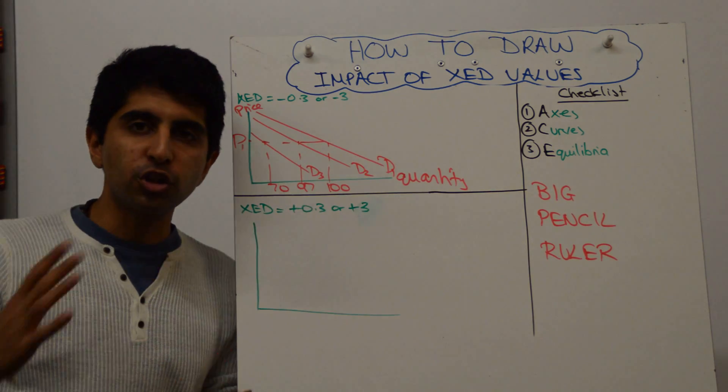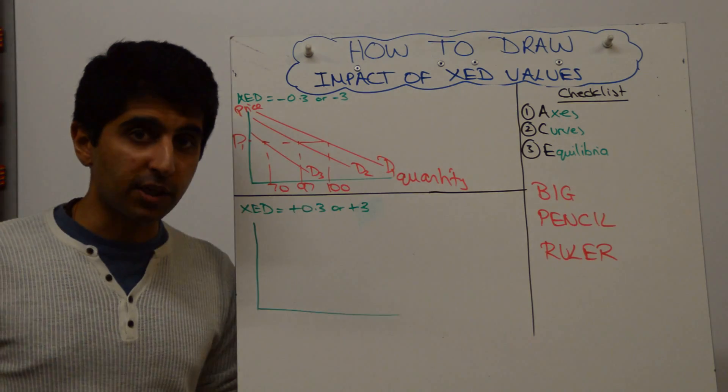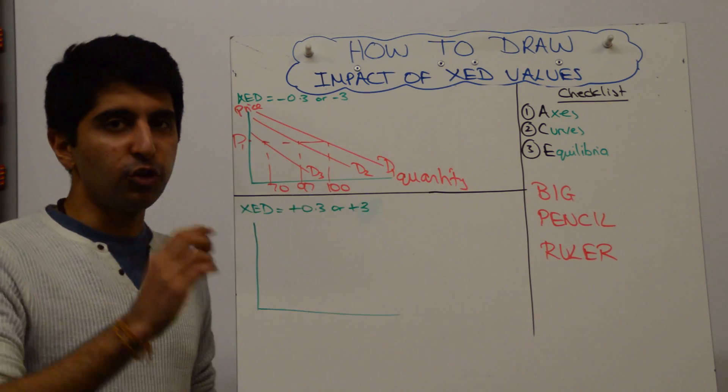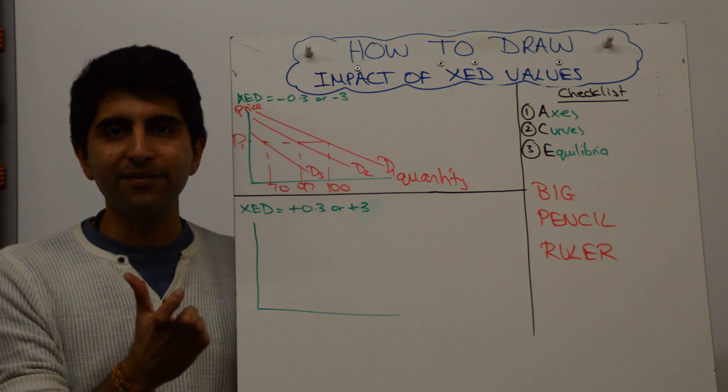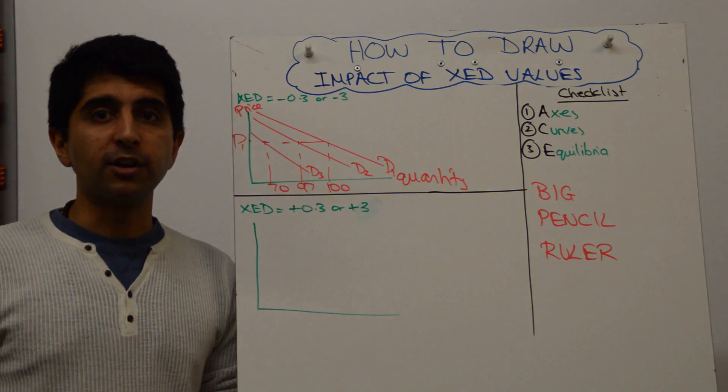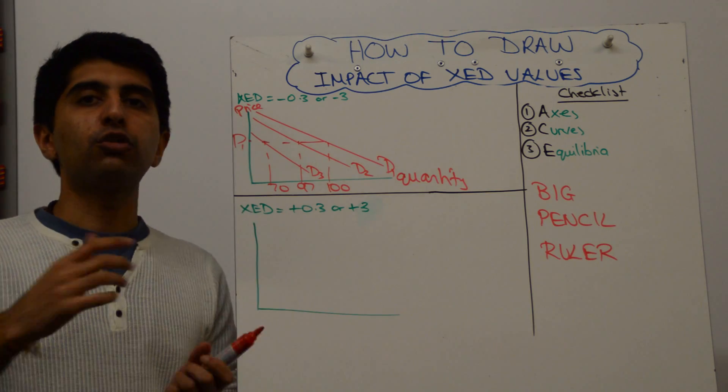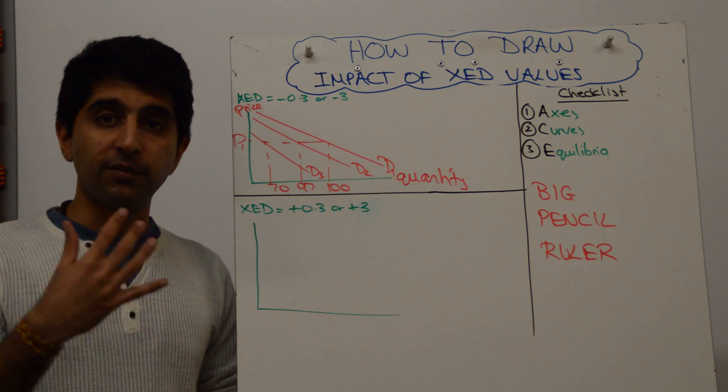So what I'm trying to say here is that to show the impact of XED values diagrammatically, it's going to be a demand shift. But using numbers, you can be very clear. If you know what the XED values are, then you can make up some numbers and make it appropriate to show how a weaker relationship means the shift is going to be smaller. A stronger relationship means that the shift is going to be greater.